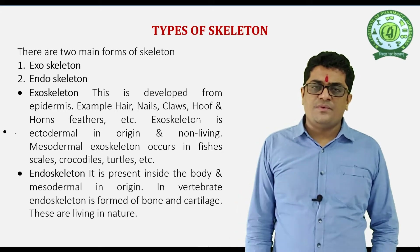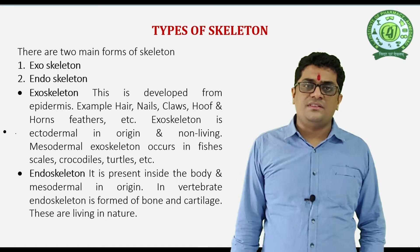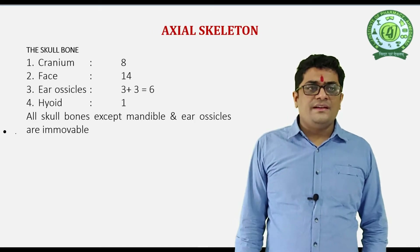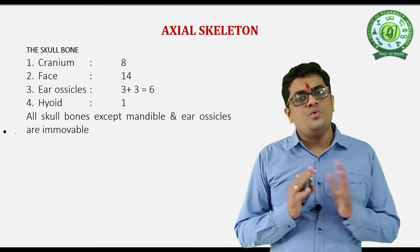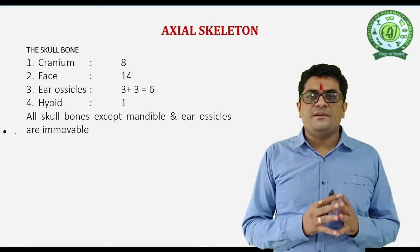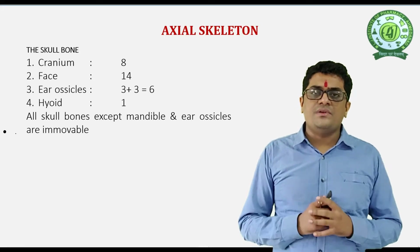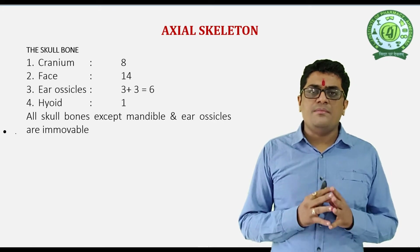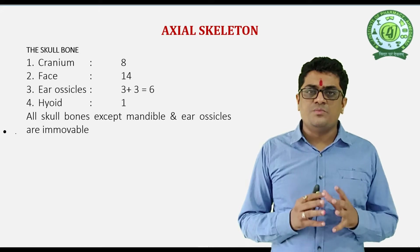The Endoskeleton is also responsible for the protection of vital organs — for example, the ribcage protects the heart and the lungs. The Skeletal System has two main parts: the Axial Skeleton and the Appendicular Skeleton. The Axial Skeleton has 80 bones and the Appendicular Skeleton has 126 bones. The total number of bones present in our body is 206 bones.